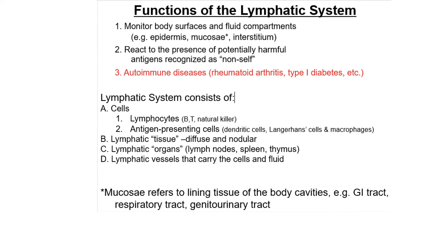Other cells present in the lymphatic system include dendritic cells present in the germinal center, Langerhans cells, and macrophages. The lymphatic system comprises cells, tissue, organs, and lymphatic vessels. Lymphatic tissue can be diffuse or nodular. Lymphatic organs are the lymph nodes, spleen, thymus, tonsils, and the primary lymphatic vessels which carry lymphatic fluid.